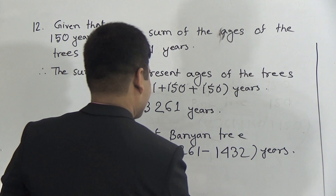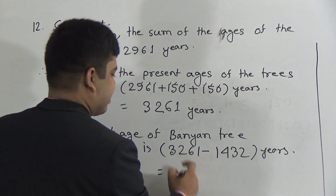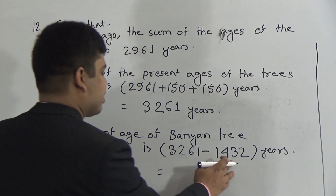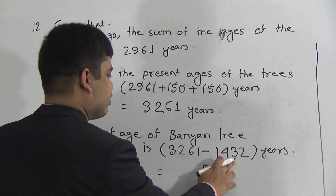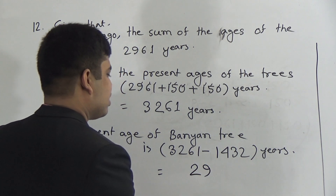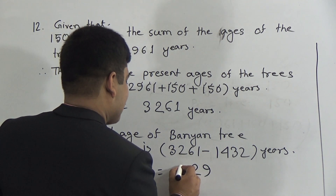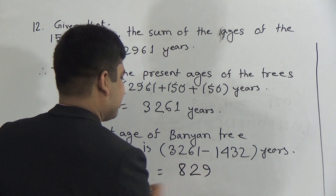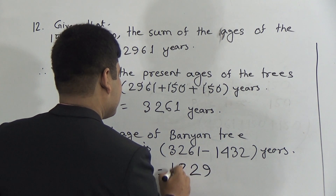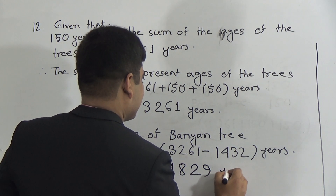Now we do the subtraction. In the ones place: 2 from 1 — borrow, so 11 minus 2 equals 9, carry 1. That 1 added to 3 makes 4; 4 from 6 needs 2. In the hundreds place: 4 from 12 equals 8, carry 1. That 1 added to 1 makes 2; 2 from 3 equals 1. So the present age of the banyan tree is 1,829 years.